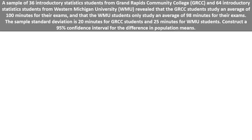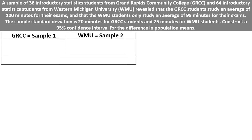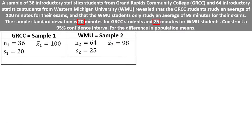Construct a 95% confidence interval for the difference in population means. We have samples from two different schools, GRCC and WMU. The sample size is 36 for GRCC students and 64 for WMU students, labeled as N1 and N2. The sample mean study time is 100 minutes for GRCC and 98 minutes for WMU, labeled as x-bar1 and x-bar2. The standard deviation is 20 minutes for GRCC and 25 minutes for WMU, labeled as S1 and S2.